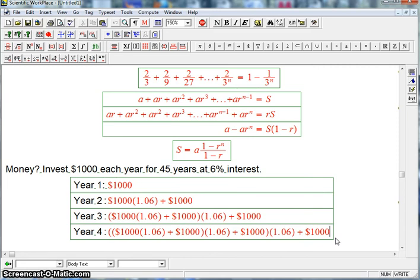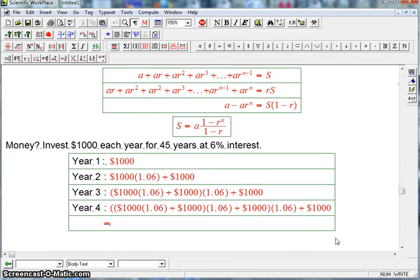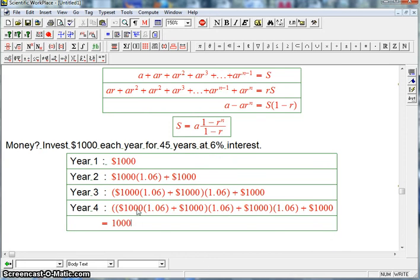And multiply that by 1.06 and add 1,000. Okay. So let's see what that is equal to. We're getting a thousand... I'm going to drop the dollar signs. If it's 1,000, then that's multiplied by 1.06 three times. So that's 1.06 cubed. Plus 1,000 times... Now this one gets multiplied by both of these 1.06's. That's 1.06 squared. Plus 1,000 times 1.06. Plus 1,000.